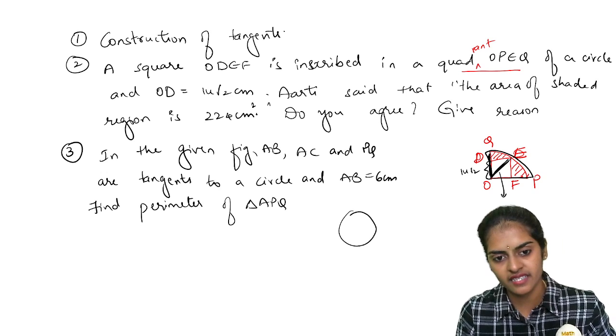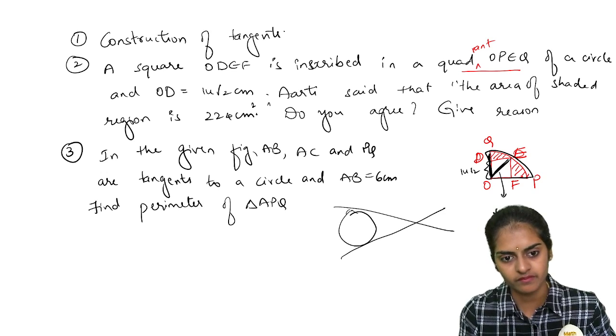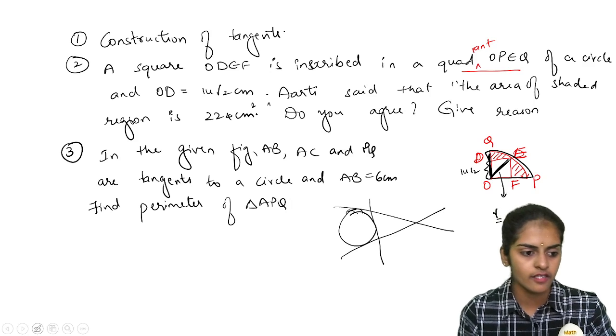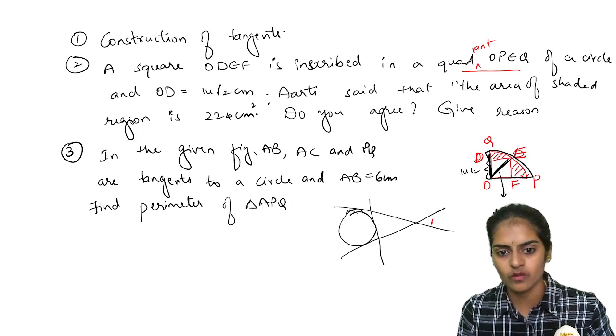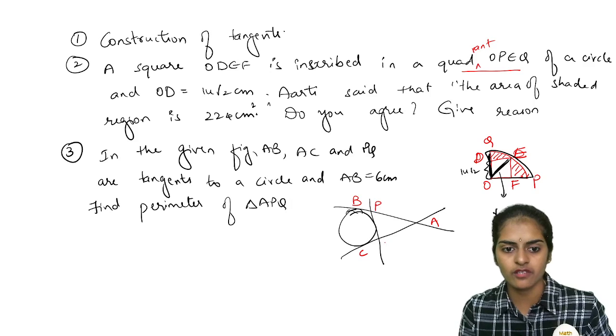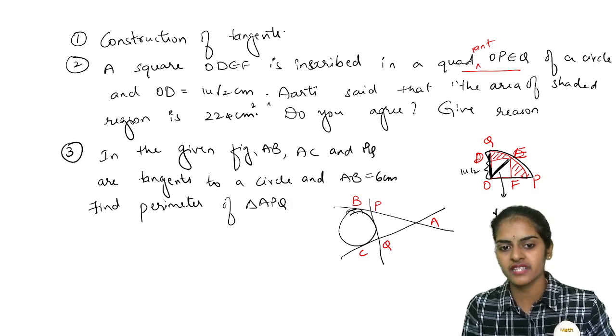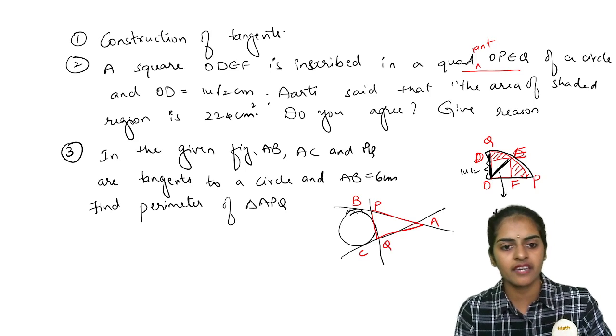So you have a circle with two tangents like this and one more tangent like this. So there are three tangents: AB, AC, and PQ. So you need to find the perimeter of this triangle APQ, and they also gave you AB.